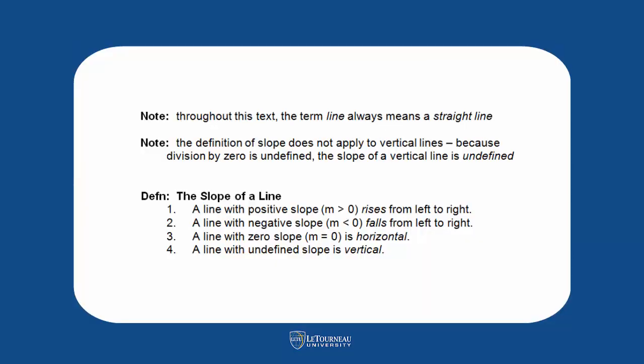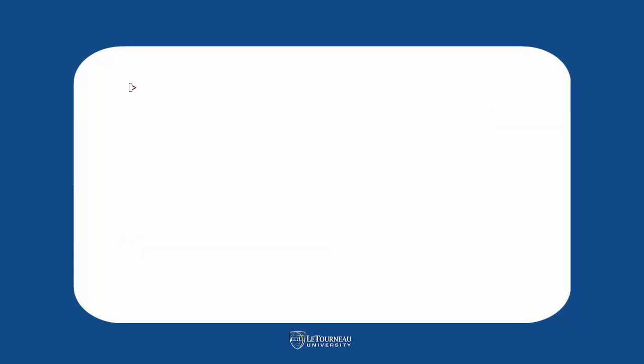Throughout this text, the term line will refer to a straight line. Division by 0 is undefined, so we've looked at four different kinds of slopes: one where m is greater than 0, line with a negative slope, horizontal line, and a vertical line.